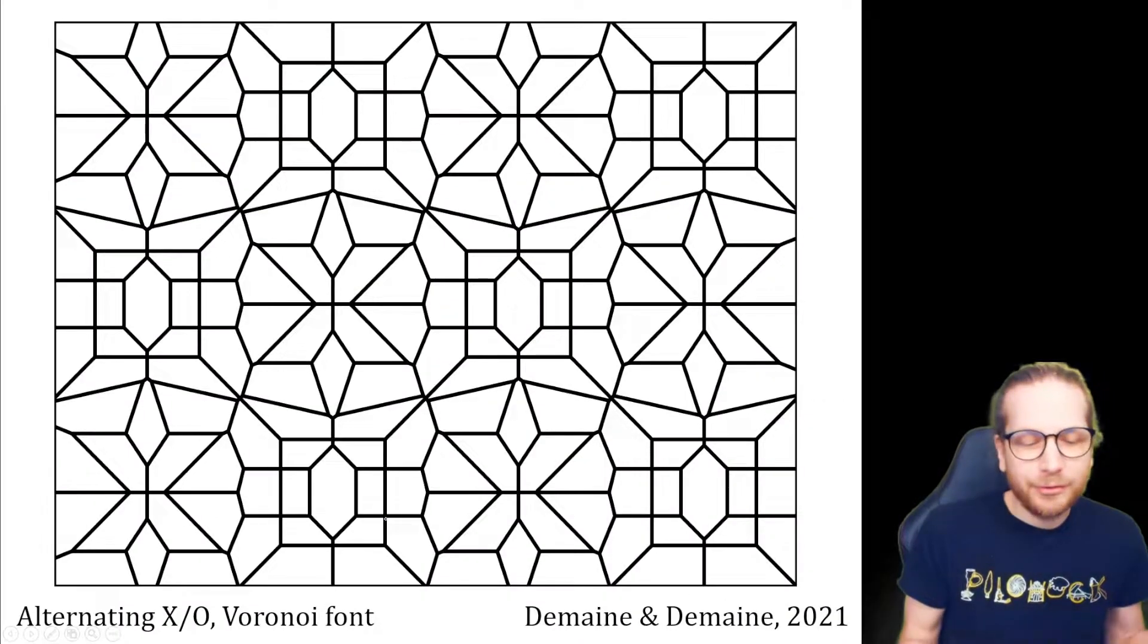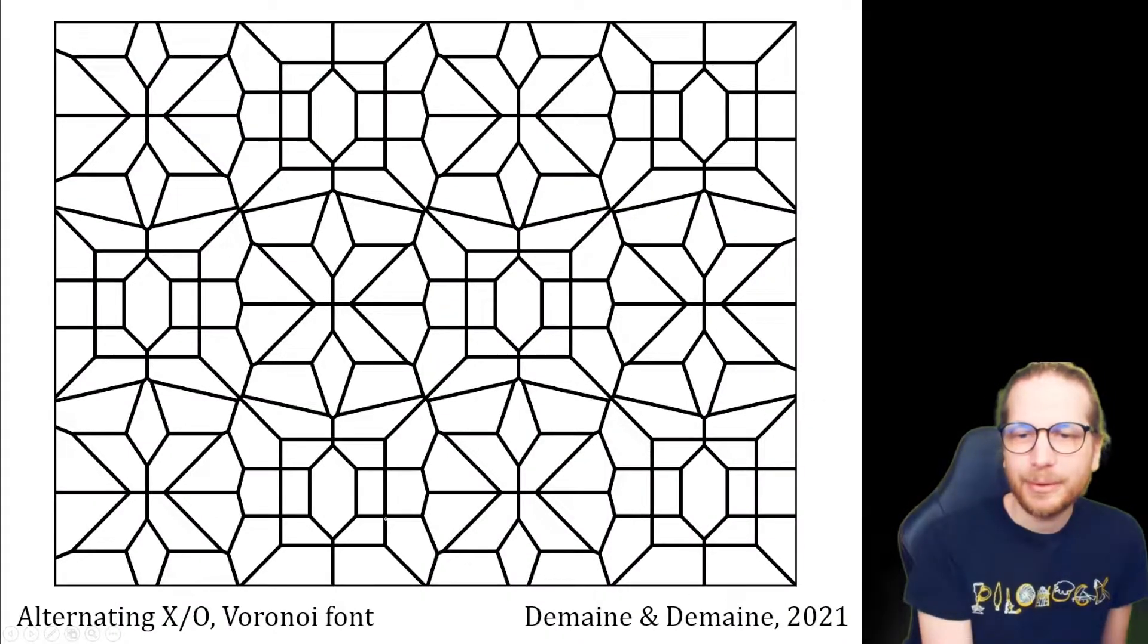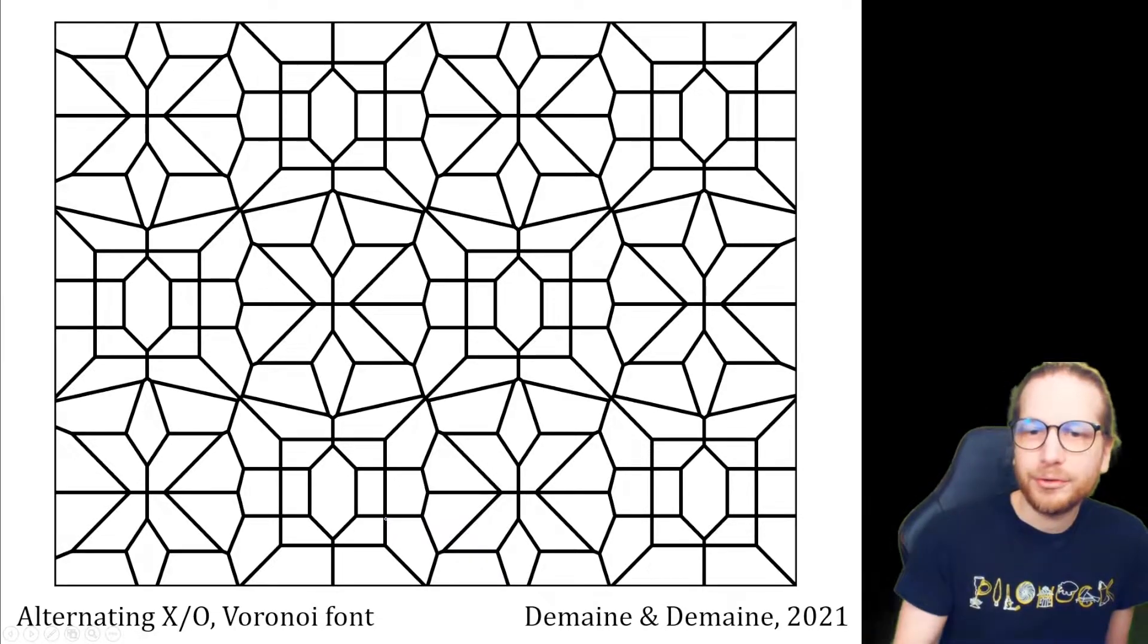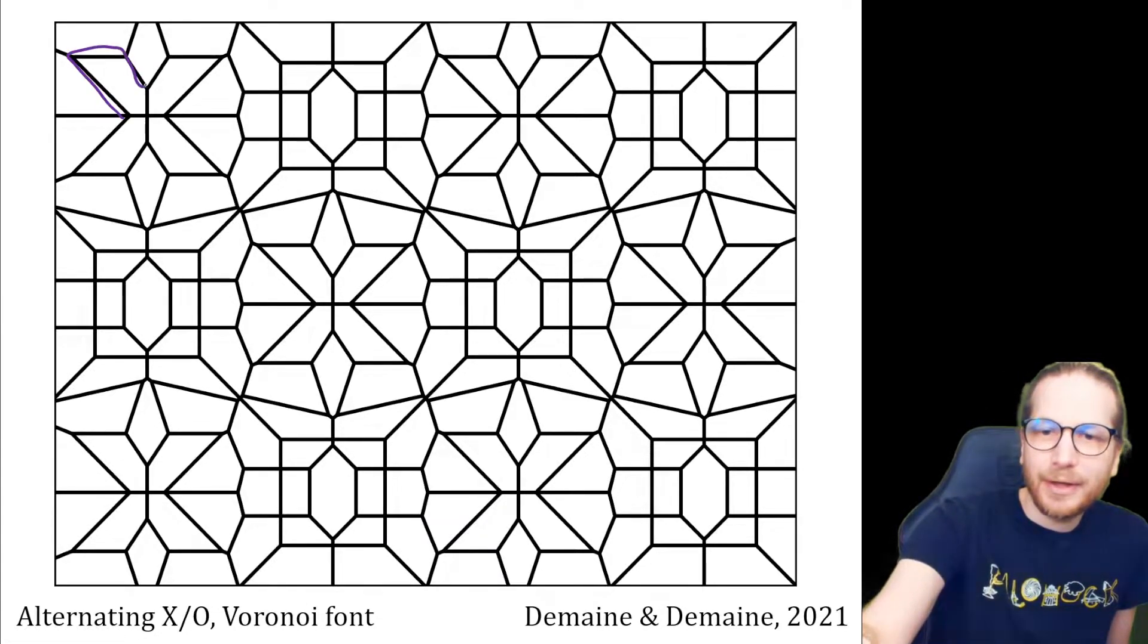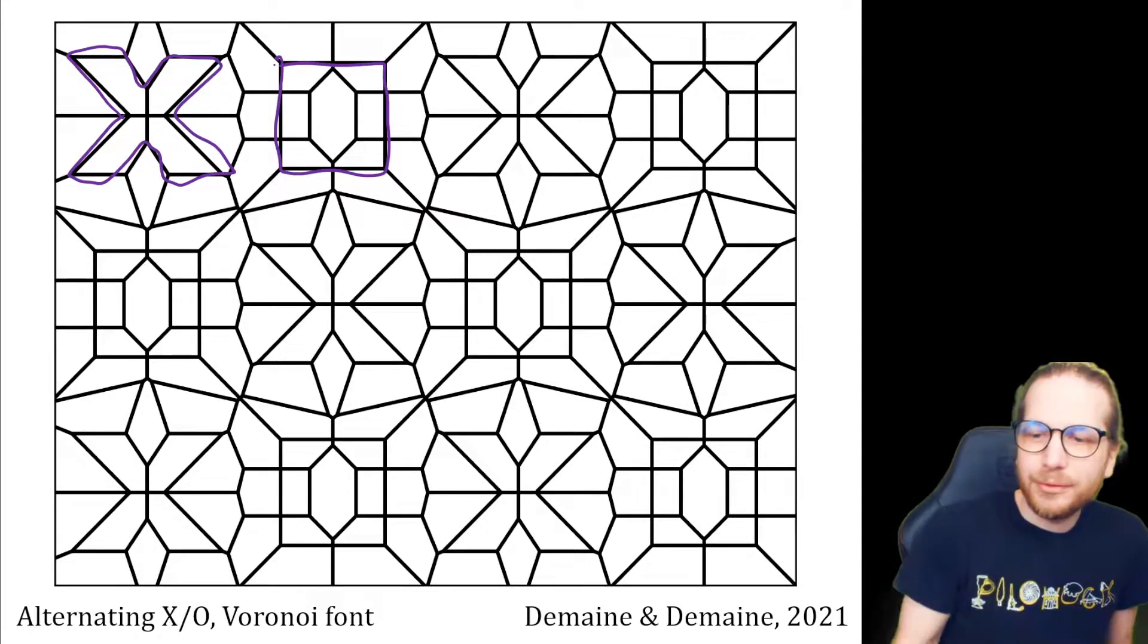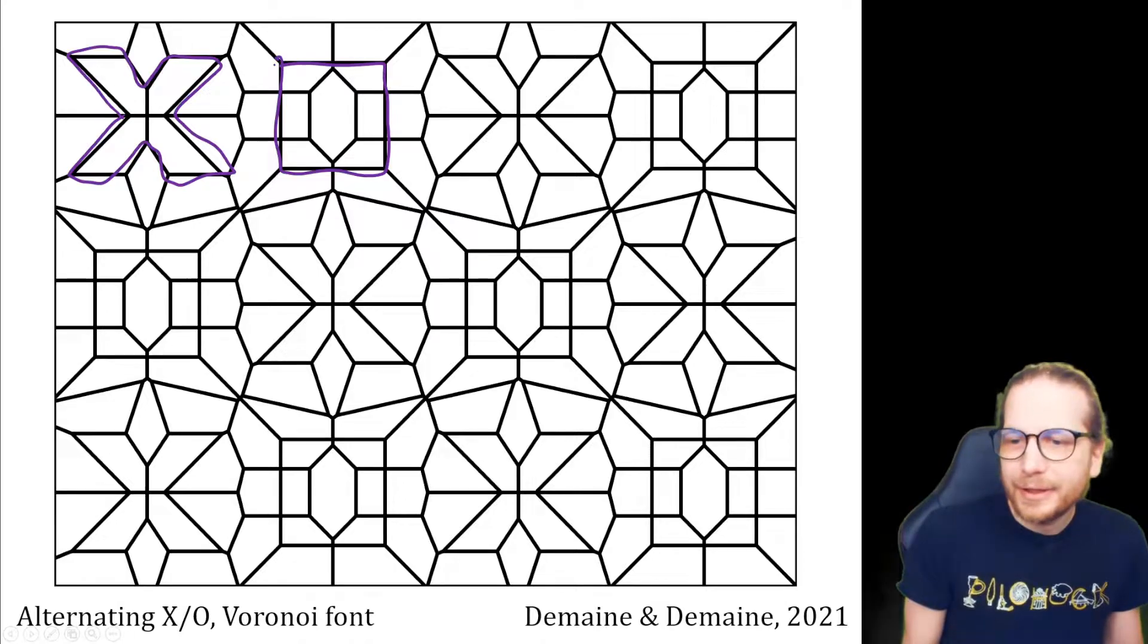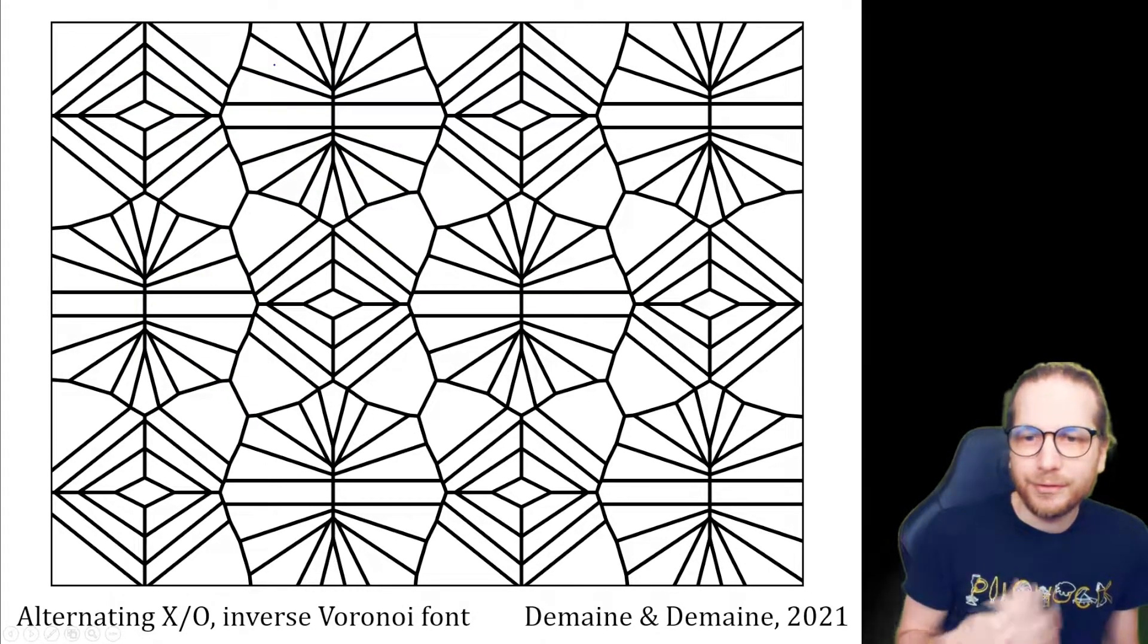So here are some simple examples, just sort of playing around with this. Here we have alternating patterns of X's and O's, and you get kind of a cool regular tiling. Or here is the same thing in the inverse Voronoi font.